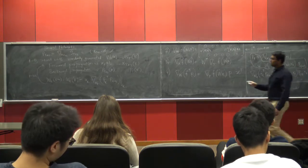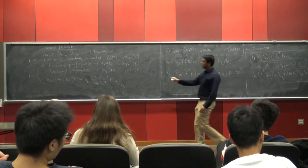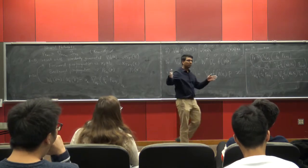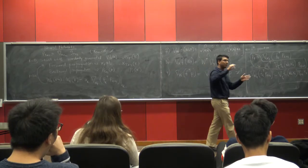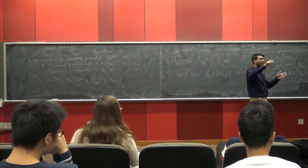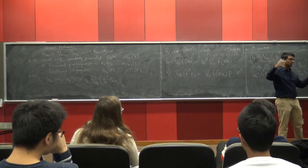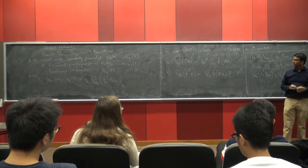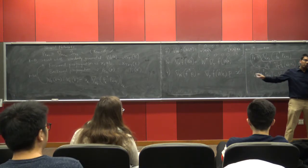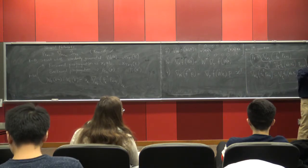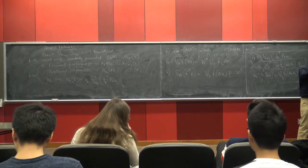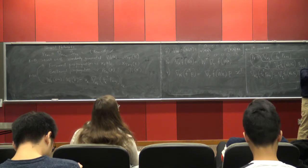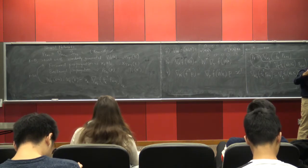Since we're using the Hamiltonian, this is a dynamic control problem where you're controlling the weights of the matrices. Back propagation actually suppresses the dynamic nature of the problem and solves the static version.